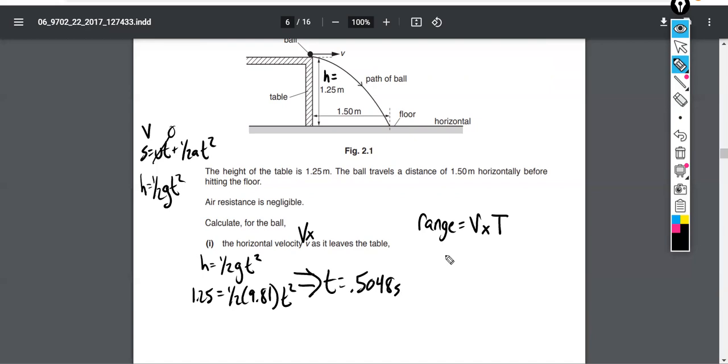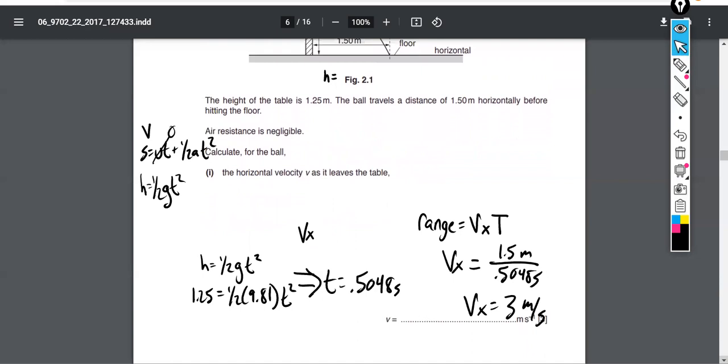So the x component of velocity, what they ask us to solve for, is going to be equal to the range, 1.5 meters, divided by the time, 0.5048 seconds. And that gives us 3 meters per second, which is what you get for your first answer. So three marks for that.